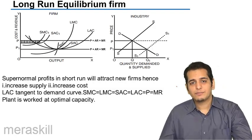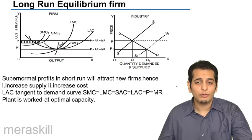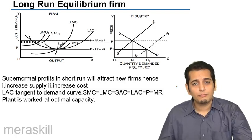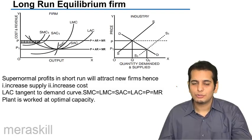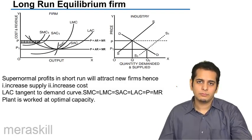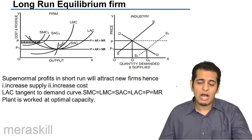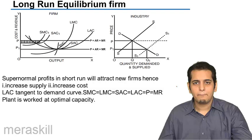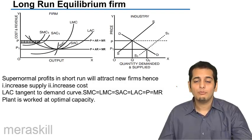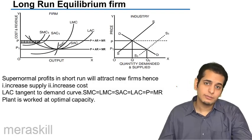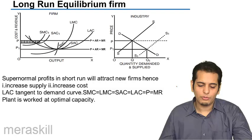Until now, we have studied the short-run equilibrium for the firm and the profit or loss situation for the firm in the short run. What would be the case in the long run? How would a firm behave in the long run? How would its cost curves and revenue curves change in the long run?